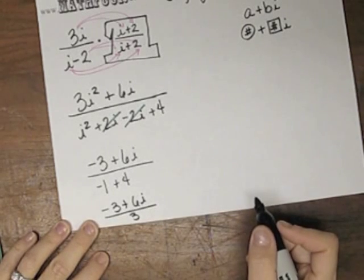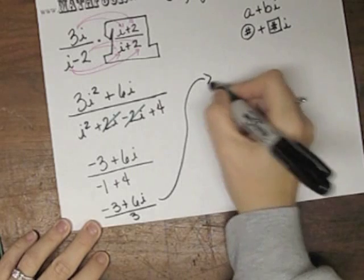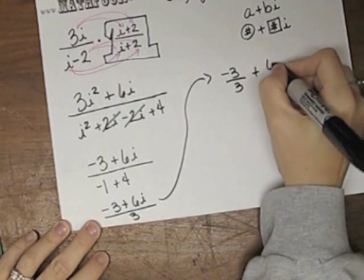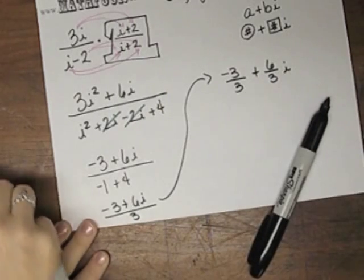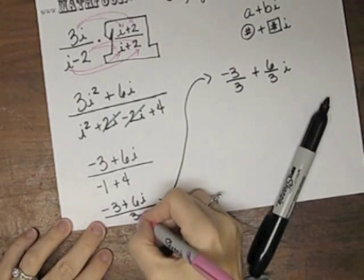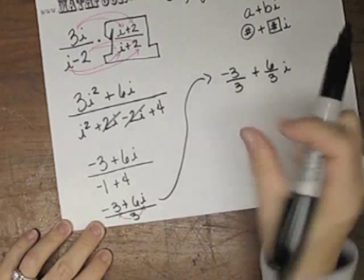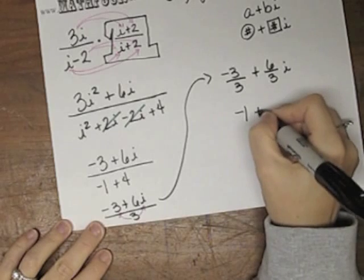Oh, how sweet is that? So taking it over here, I can do negative 3 over 3 plus 6 over 3i. Be careful of this because this guy has to go underneath each piece separated by this plus.